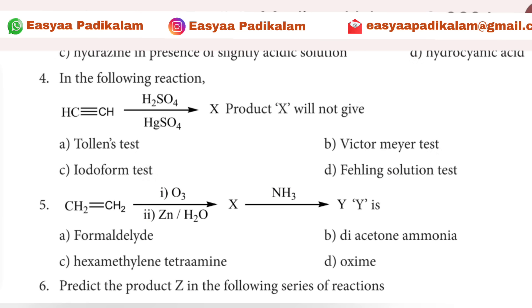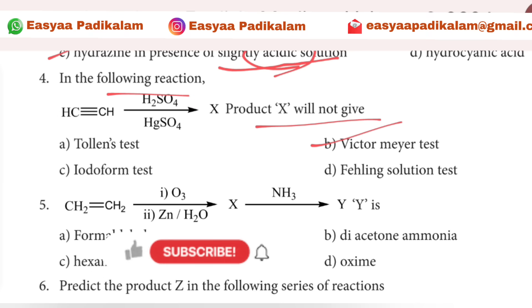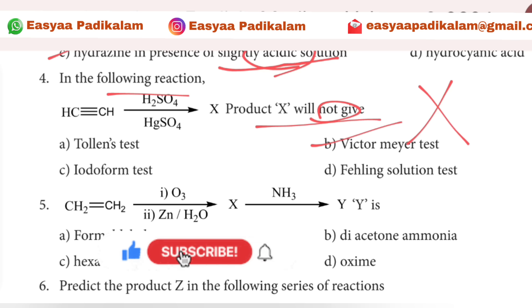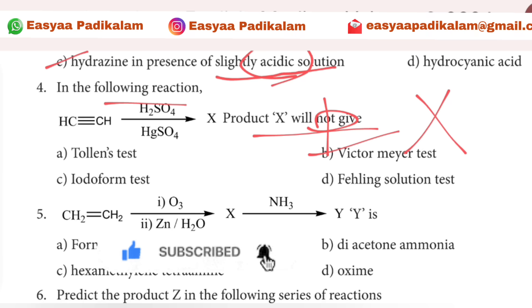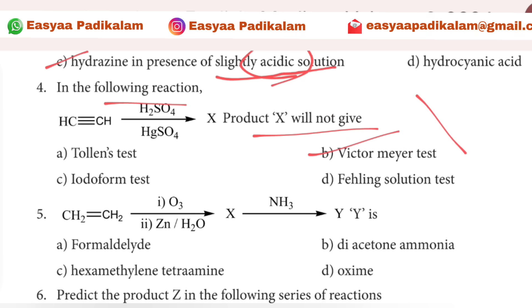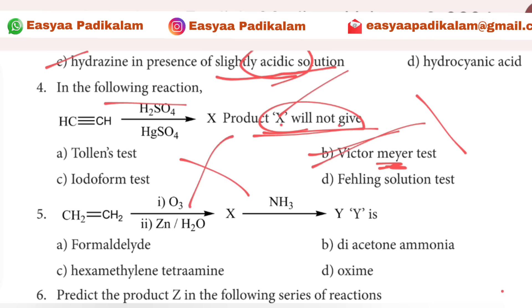Fourth question: in the following reaction, X will not give a positive result. So X is wrong. This relates to the Victor Meyer test. Victor Meyer test is a major test. So X does not satisfy the Victor Meyer test conditions.